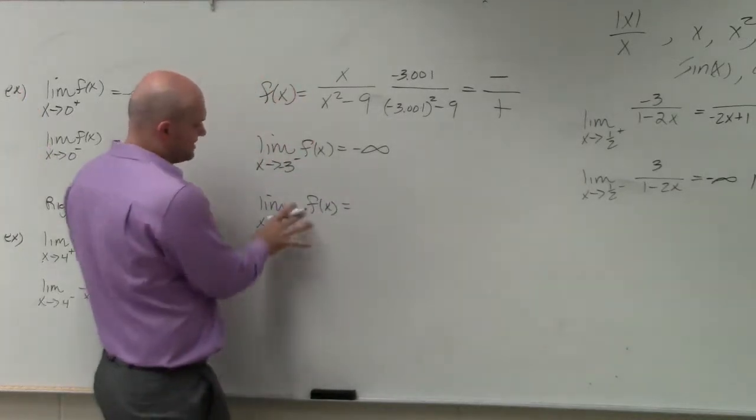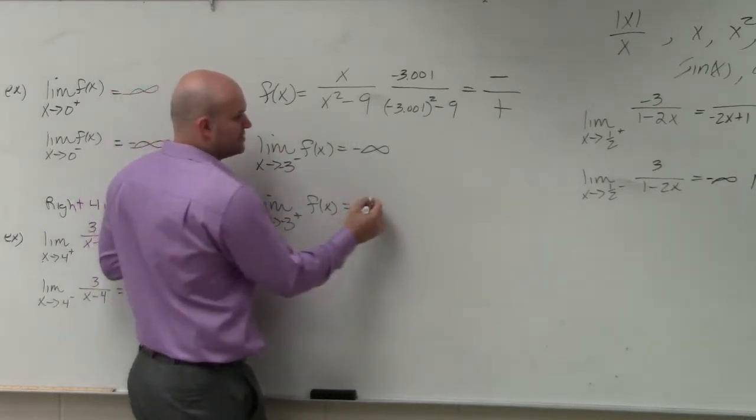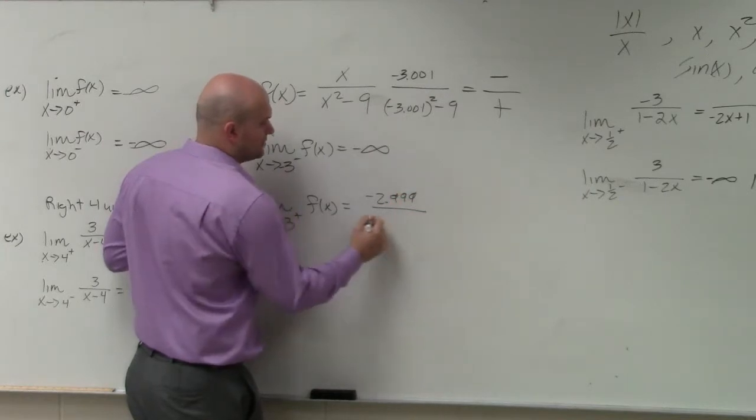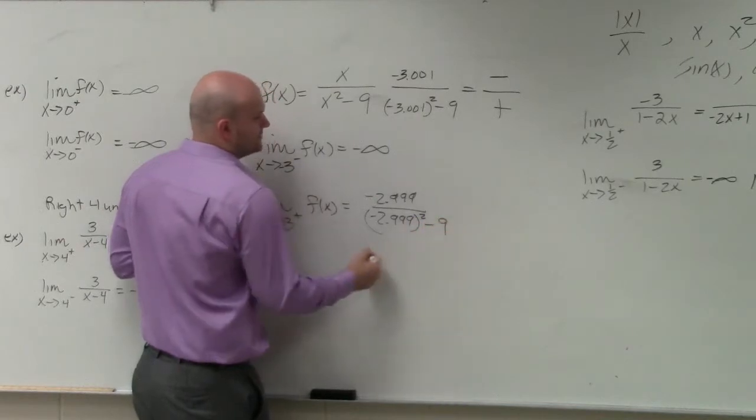If you look from the positive side, let's choose a value that's just to the right of negative 3. So negative 2.999.